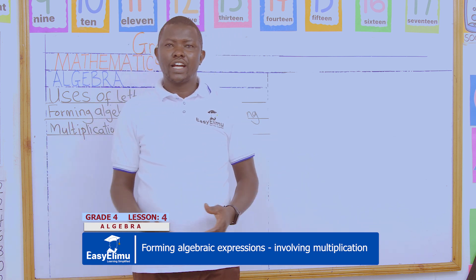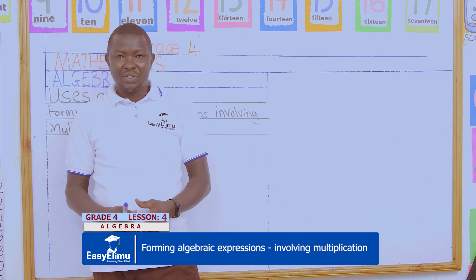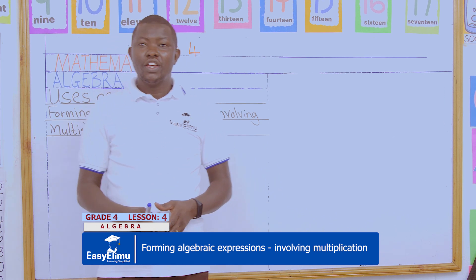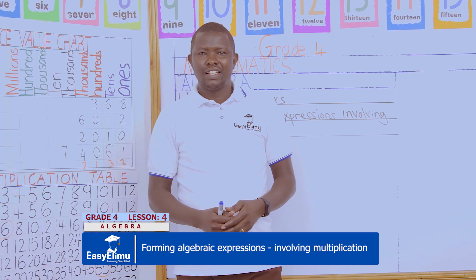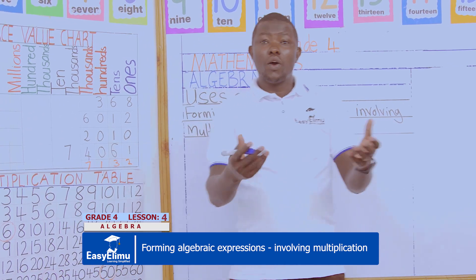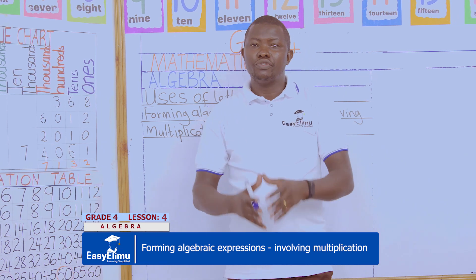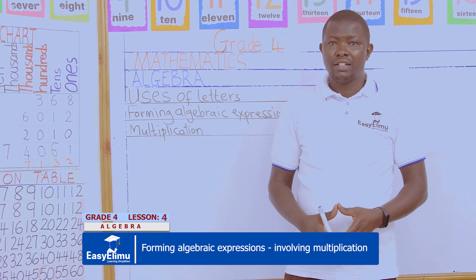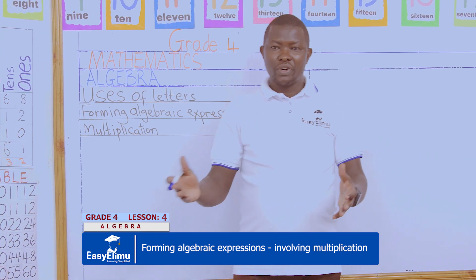And just for a recap, in our previous lesson we learned how to form algebraic expressions involving subtraction. We saw John giving out part of what he had and we formed an expression of the remaining part or the remaining portion.